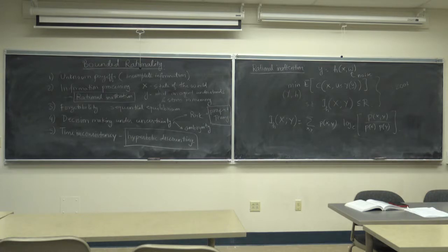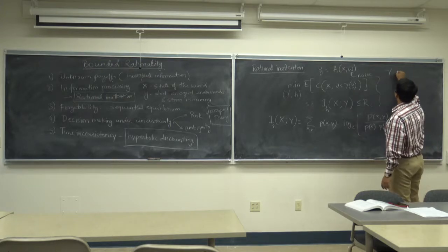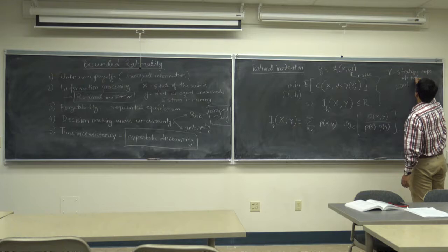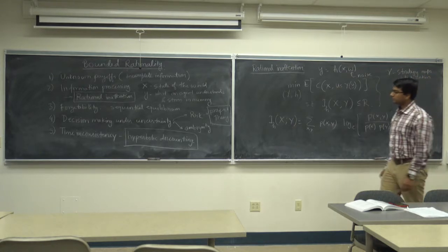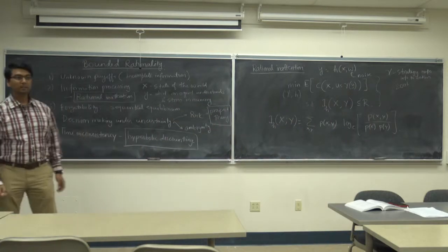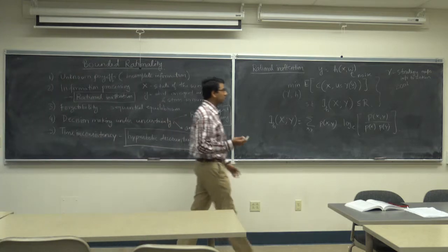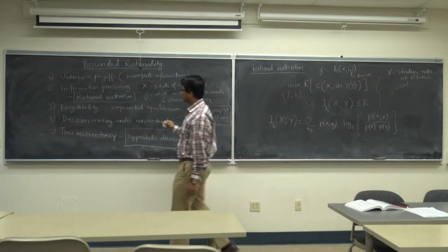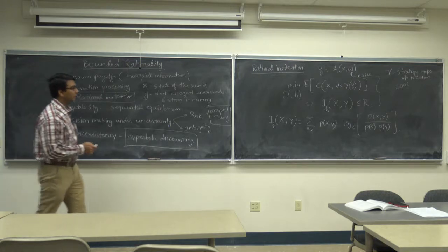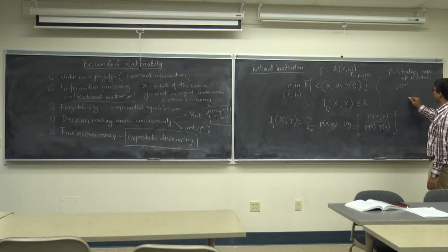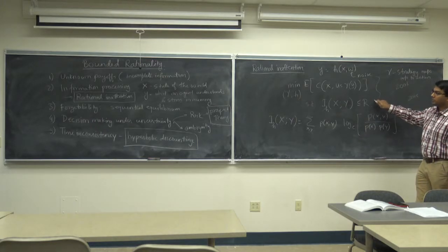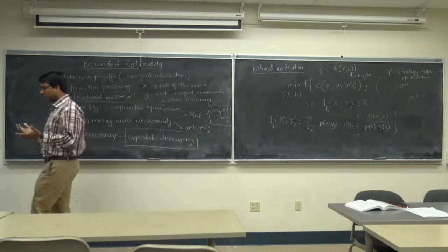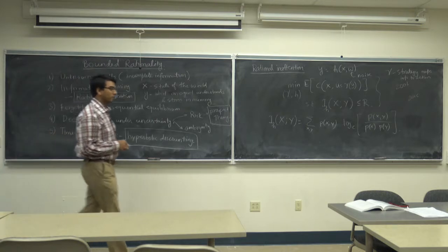Gamma is your decision rule — your strategy which maps information to action. I haven't seen any paper that has extended rational inattention to a game problem. However, I have seen papers very recently, around 2015, extending this model to a Markov decision problem — infinite horizon Markov decision problem. So there has been some research in the single-person decision problem setting, but in a multiparty setting I don't know how the solution looks. Something worth thinking about.